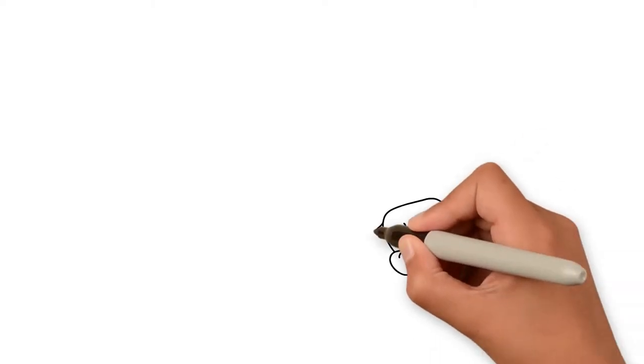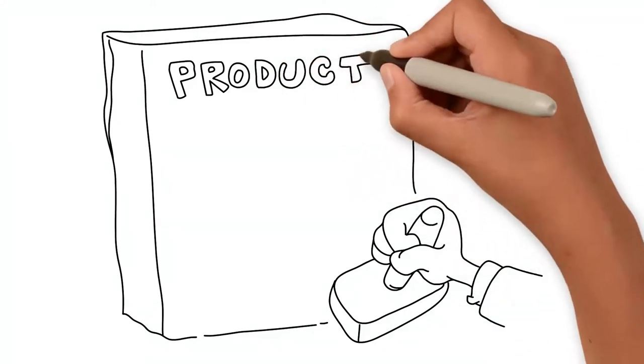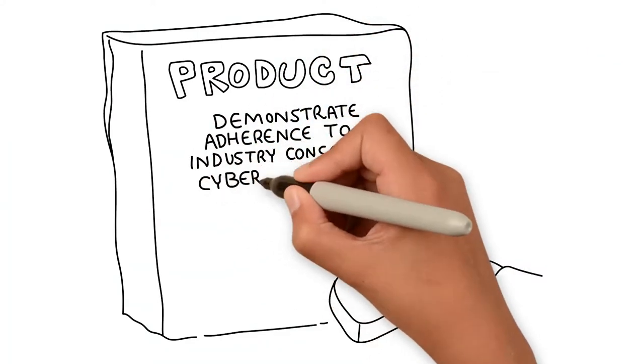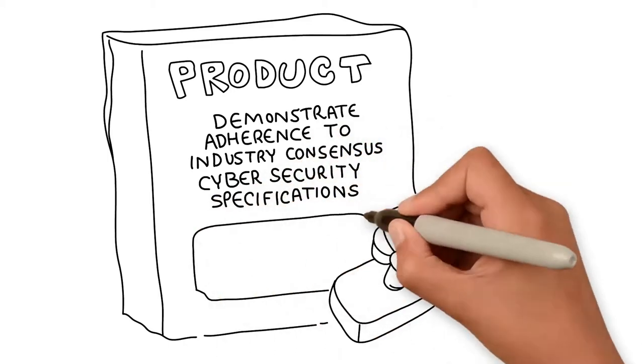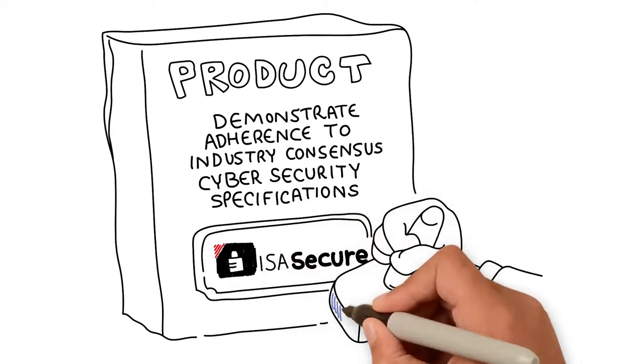The ISA Secure designation is earned by industrial control suppliers for products that demonstrate adherence to industry consensus cybersecurity specifications. It addresses both security characteristics and supplier development practices based on the IEC 62443 Security Lifecycle.